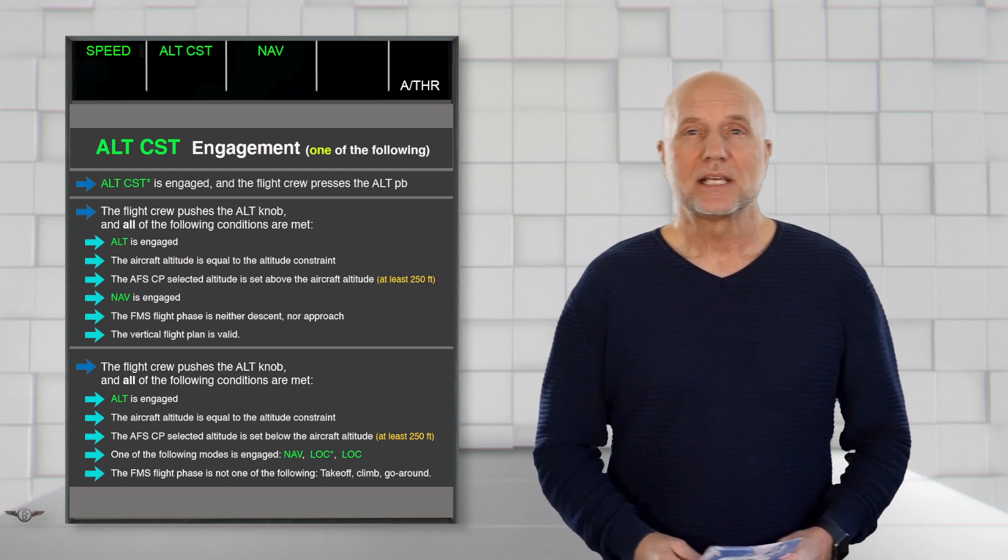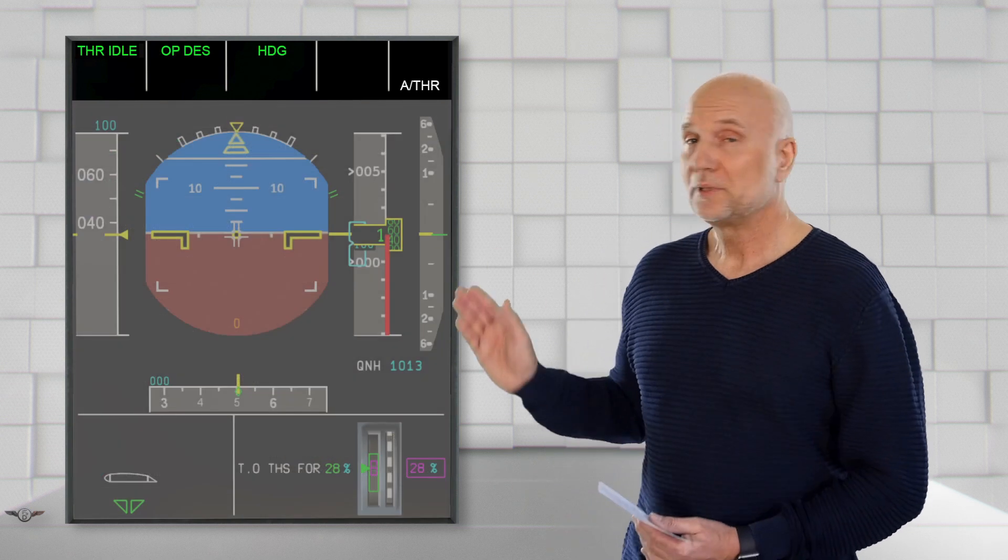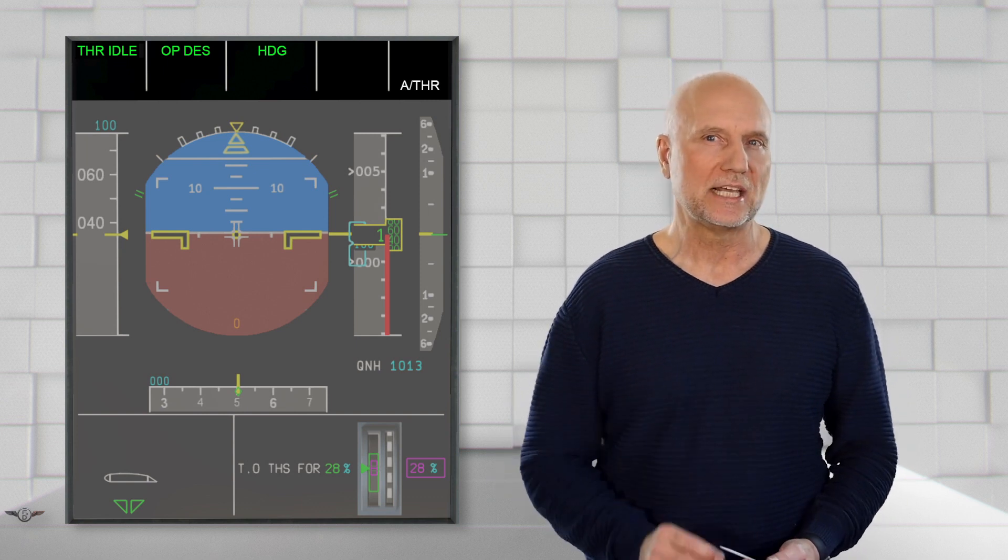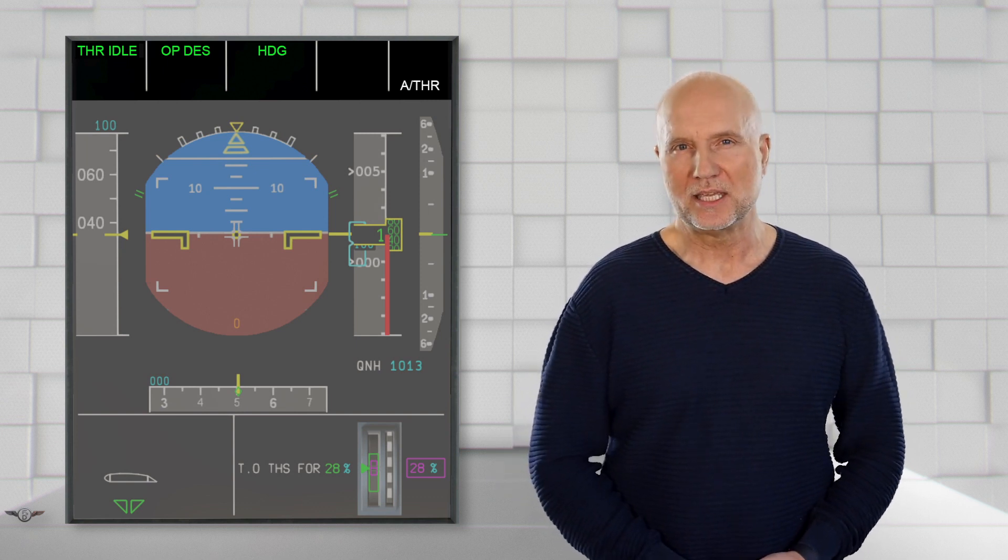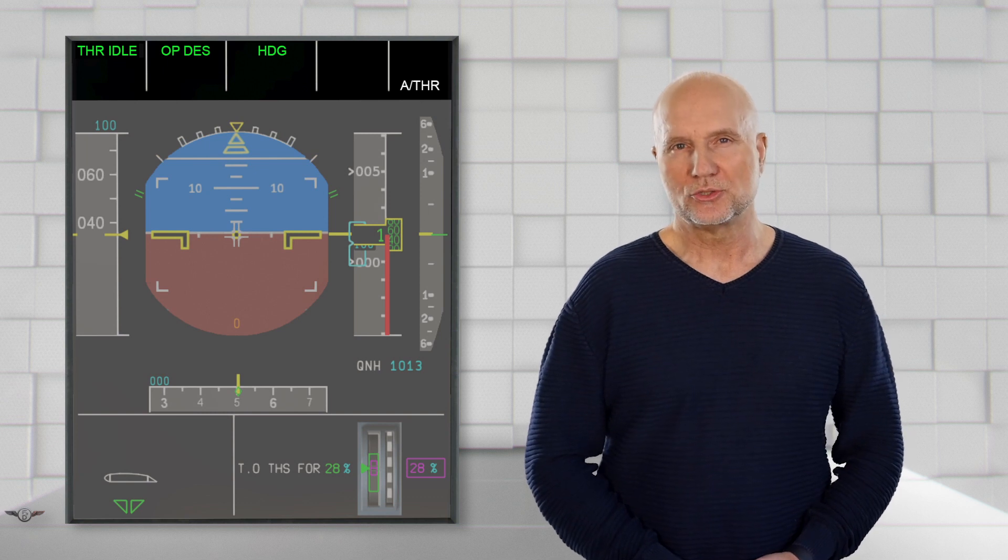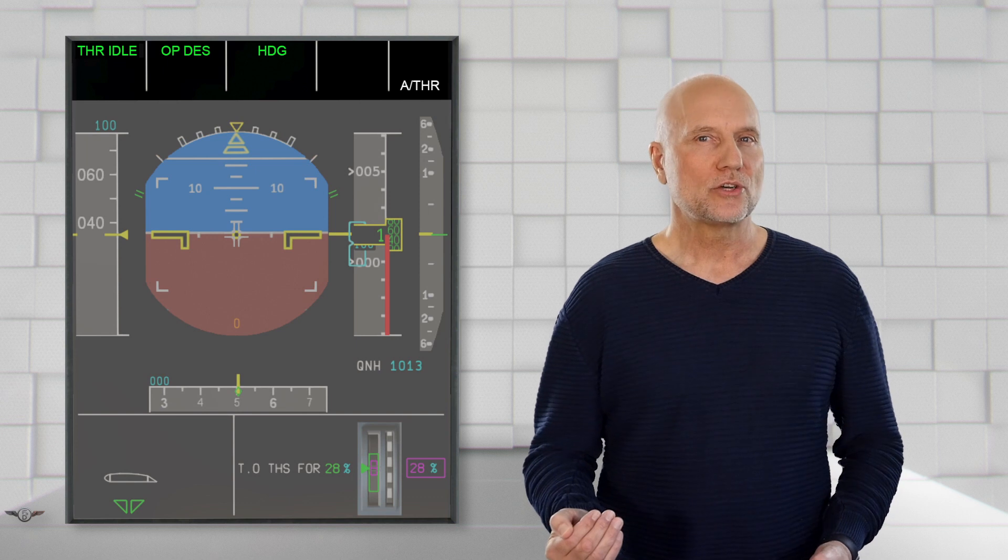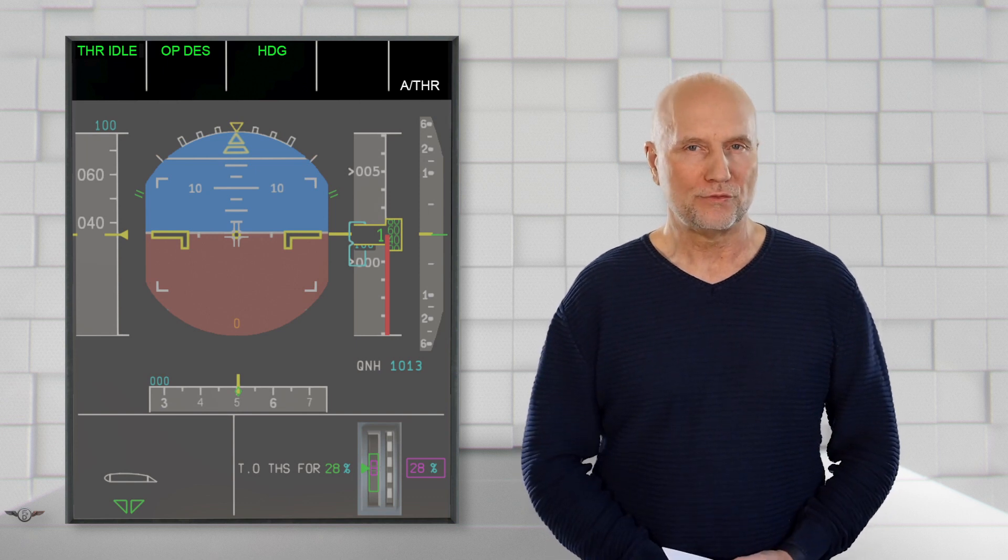Our next engaged vertical mode, Open Descent, is a selected mode. The pilot flying initializes this mode by pulling the Altitude selector knob on the AFS-CP with a lower target altitude selected. Engine thrust will reduce to idle as there is no managed vertical profile available.